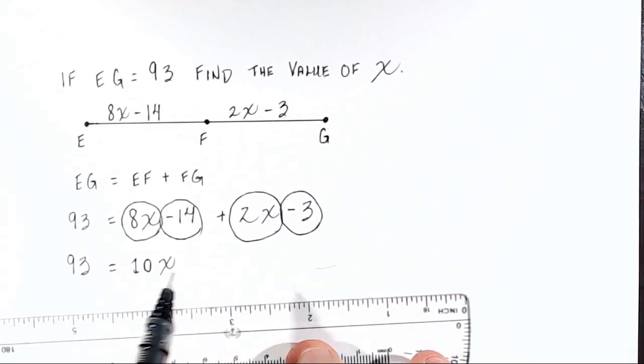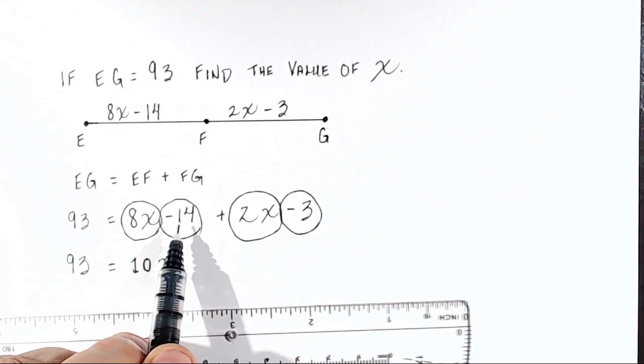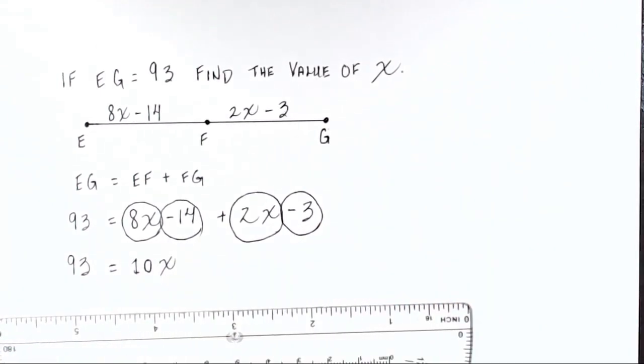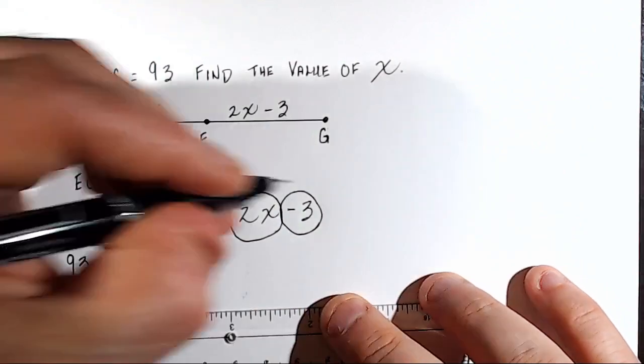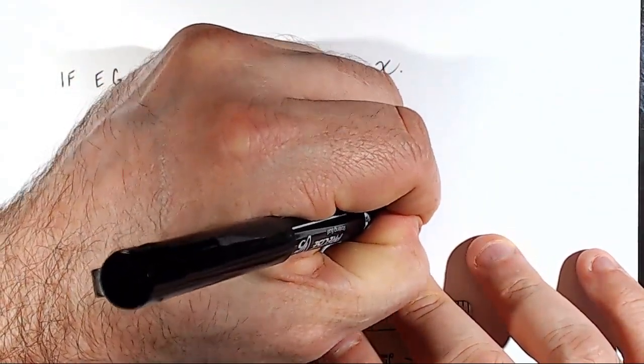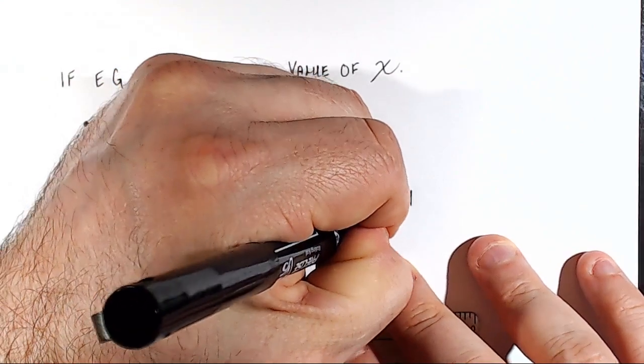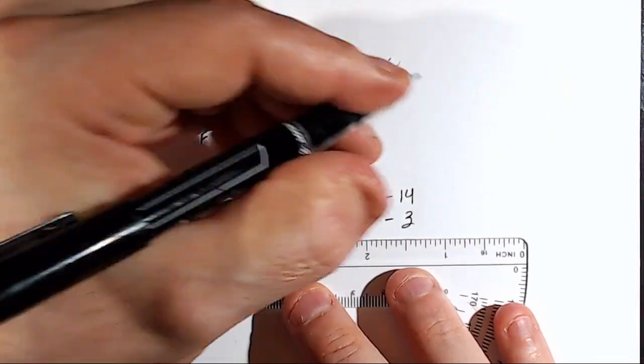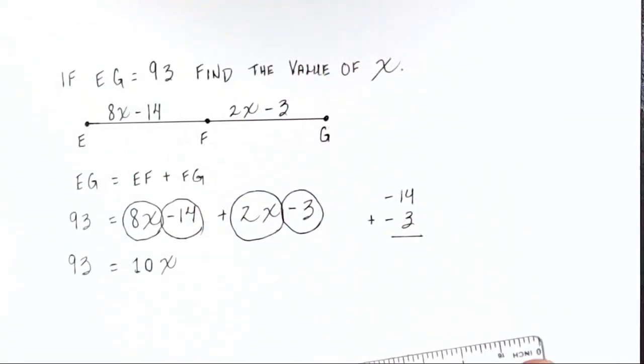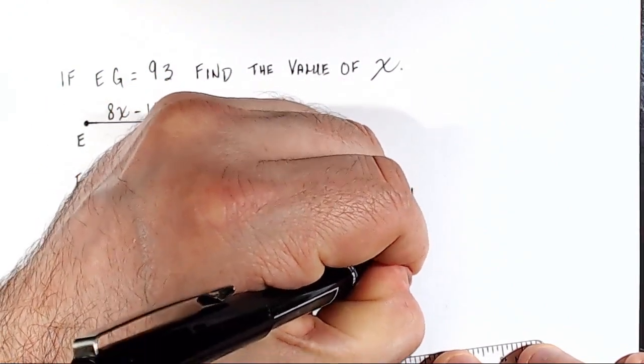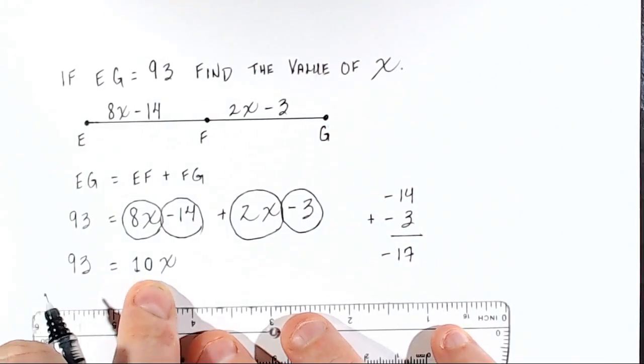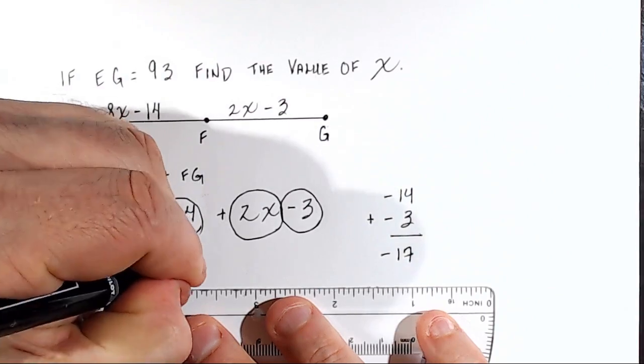And now we add these numbers. Negative 14 and negative 3. So what is negative 14 plus negative 3? So if you have two negative numbers, negative 14, and you're going to add to negative 14 another negative number, negative 3, you're going to end up with a bigger negative number. Okay? So negative 14 plus negative 3 is negative 17. So that means that 93 equals 10X minus 17.